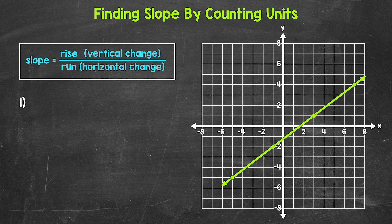Looking at the line, notice that the line is moving upward as it's moving from left to right. This is what we call a positive slope. As far as finding the slope, slope equals the rise over the run — the vertical change over the horizontal change. Basically, we're looking at how fast this line is moving upward as it moves from left to right.